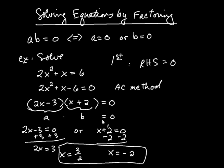What's important to note is the form we had to achieve: zero on the right-hand side, and the left-hand side must be a product. Once you have that, then you proceed as in this example.